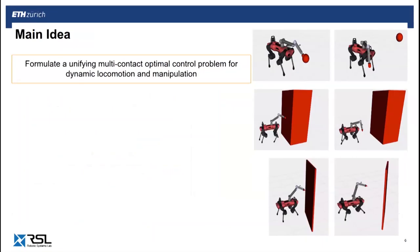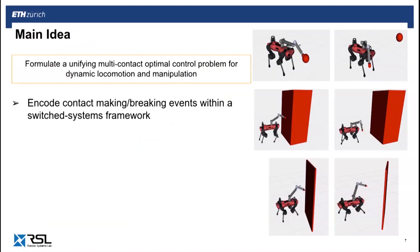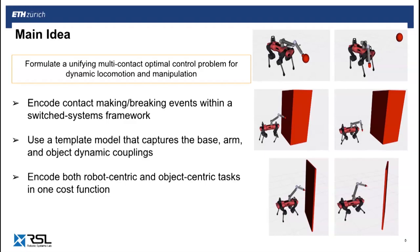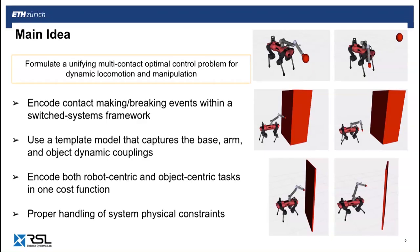The main idea for this work is to exploit the duality between dynamic locomotion and manipulation to formulate a unifying optimal control problem that can be solved in real time. We adopt a switched systems perspective when handling contact making and breaking events, which appear when defining gait sequences or manipulation contact schedules. We also ensure the chosen simplified model captures the dynamic coupling between the base, the arm, and the object being manipulated. This allows us to encode both robot-centric and object-centric tasks in the same cost function, while generating whole-body maneuvers that push the system's performance limits without violating physical constraints.